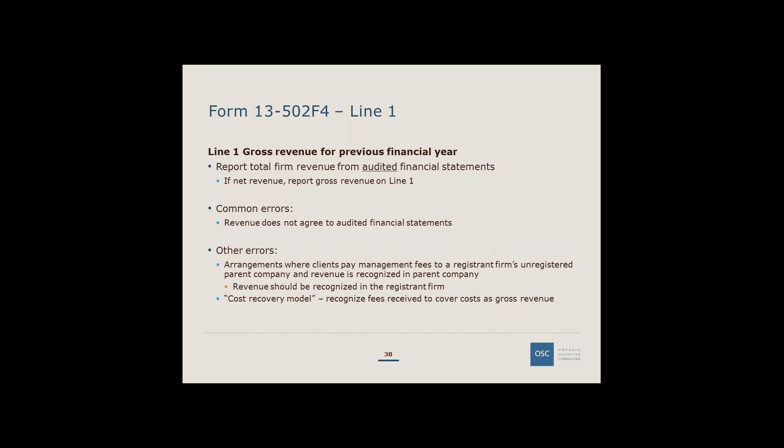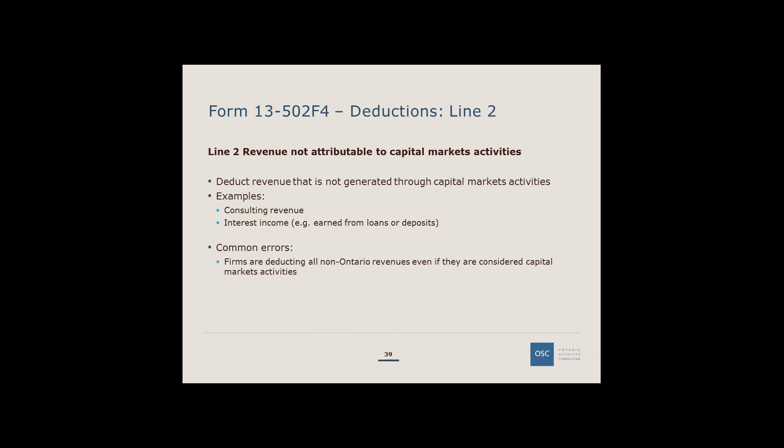Once all firm-wide revenue is reported, Line 2 allows deducting revenues not considered capital markets activities — revenues where registration or an exemption from registration is not required, such as consulting income or interest income on cash holdings. A common error on this line is firms deducting any revenues that are not Ontario-related, which then dilutes revenue further when the Ontario percentage is applied, producing a result that doesn't accurately reflect actual Ontario revenues.